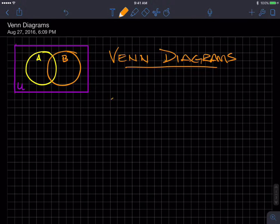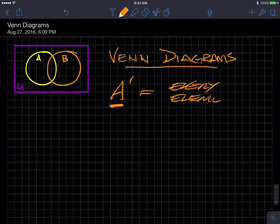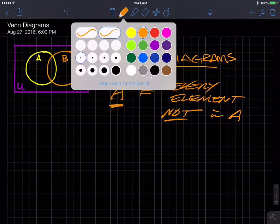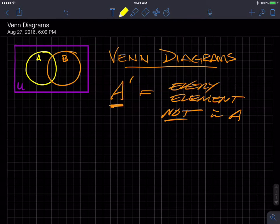So now if we're talking about the complement of A, that would be everything that's not in the set A. So that's everything, every element not in A. So that would be represented by this shading. Everything not in A or complement A would be this. That would be everything that's in B.